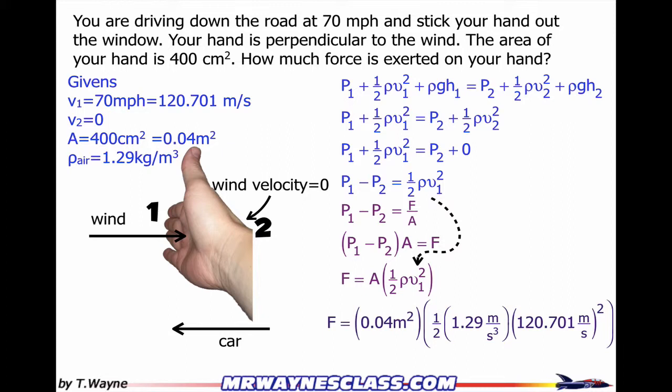Next, I'll throw in all my numbers that I know, do a little bit of math, and I get the force on the wind side of my hand to be 375 newtons.